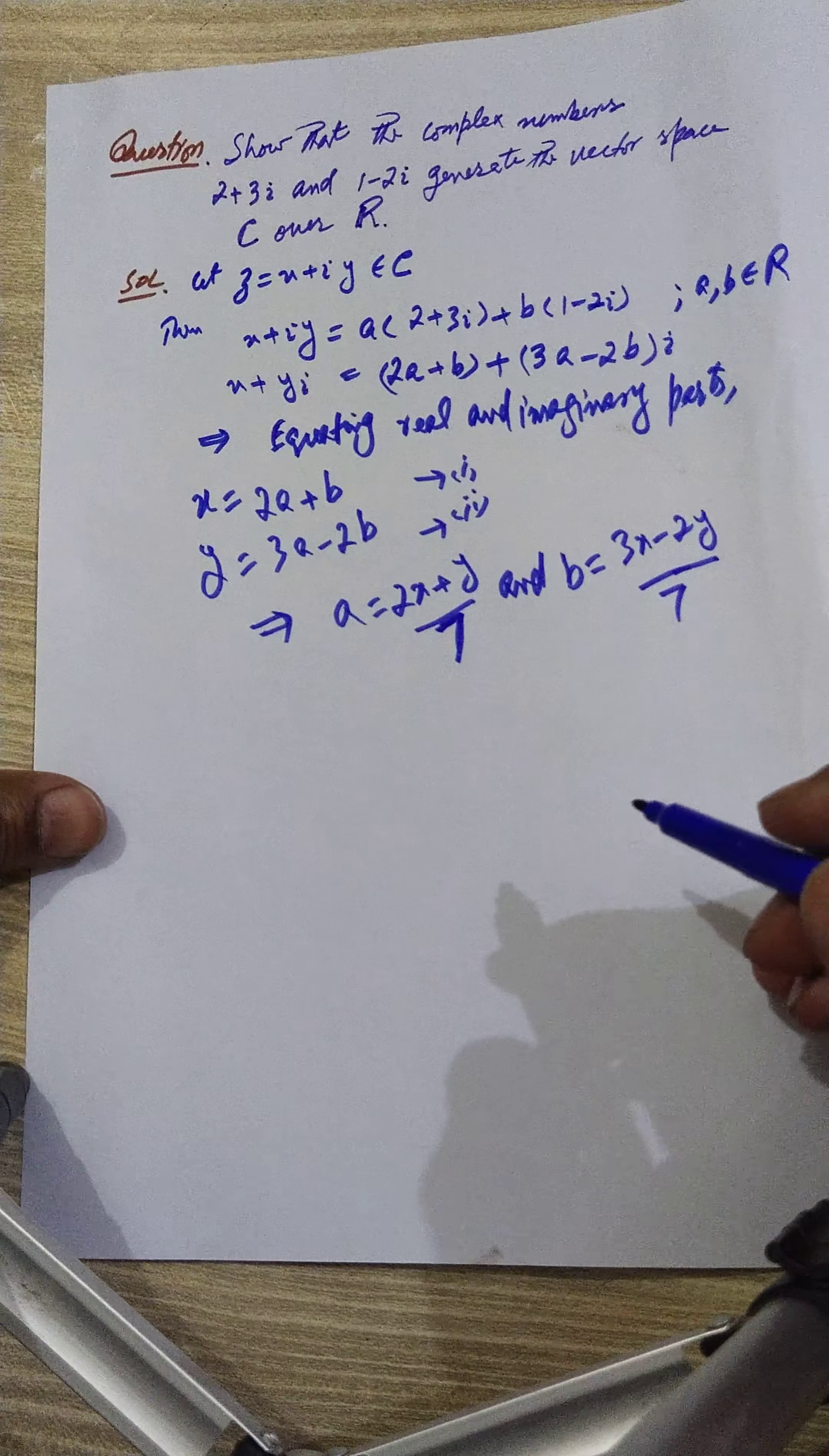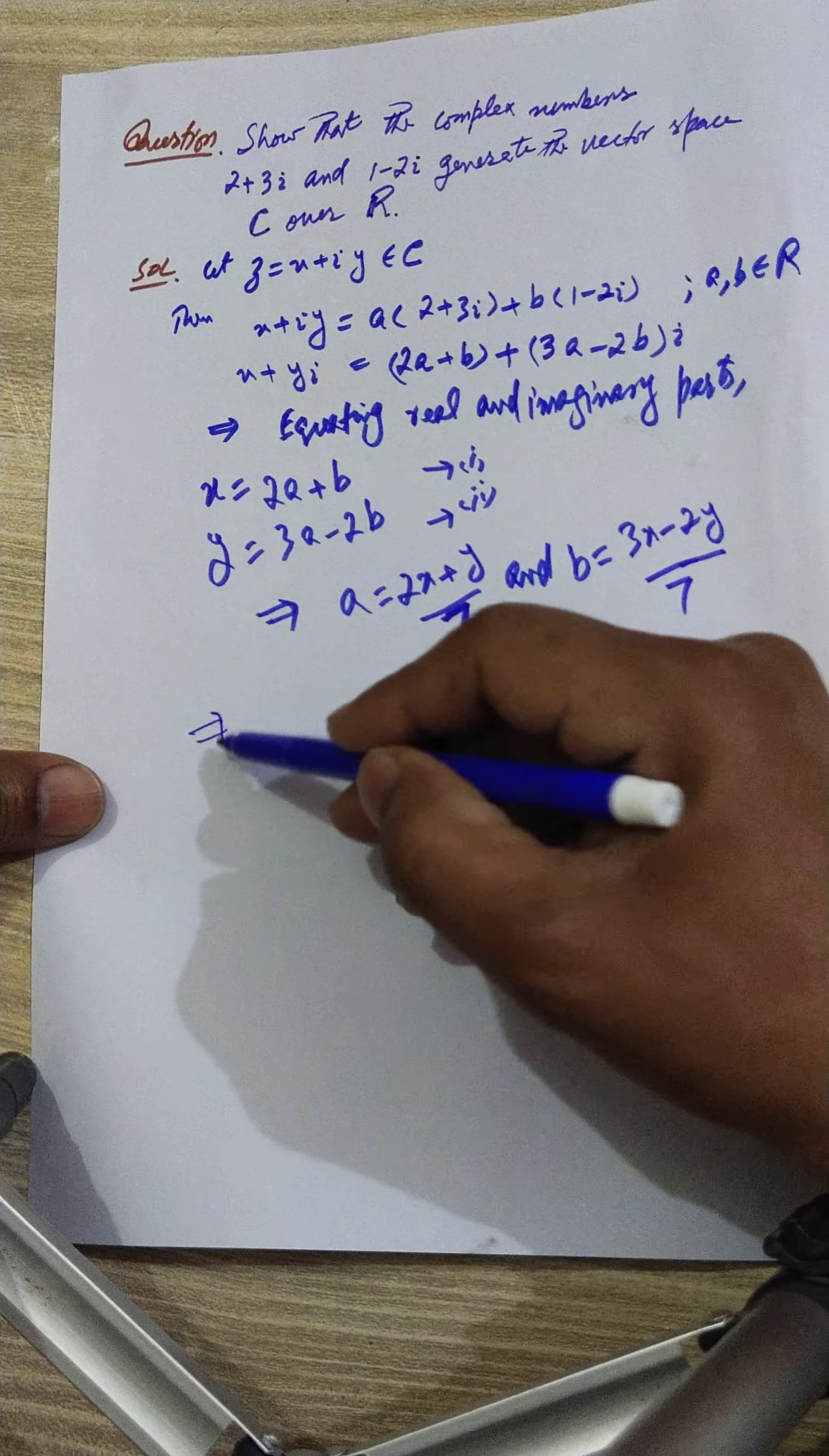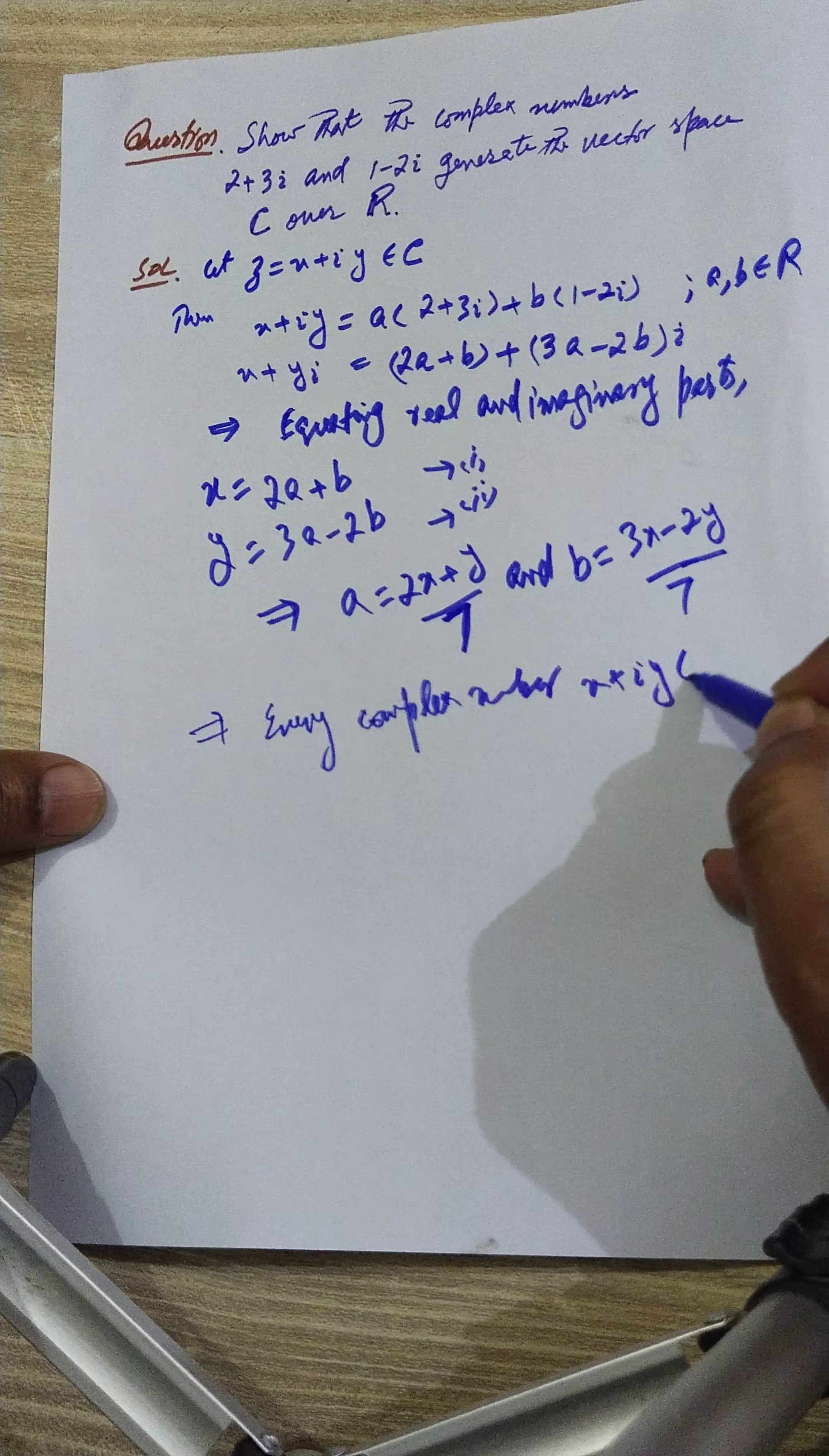So you found the values of a and b. This means that every complex number is a linear combination of these two vectors. a and b are arbitrary numbers.